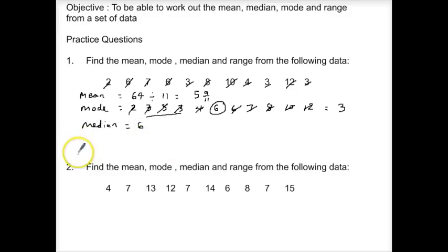And finally the range. The range is just the difference between the biggest and the smallest number. So from our ordered list we see our biggest number here is 12 and the smallest number is 2. To find the difference we subtract the smallest from the largest and we get our range of 10.